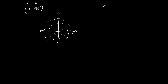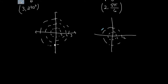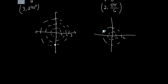Now let's do radians: the point (2, 5π/6). Where is 5π/6 located? It's in quadrant 2, so the point is somewhere there. r equals 2, so I'm on the second concentric circle, a distance of 2 units from the pole in quadrant 2. My reference angle is π/6, so I'm located closer to the polar axis than the vertical axis — and here's the point (2, 5π/6).